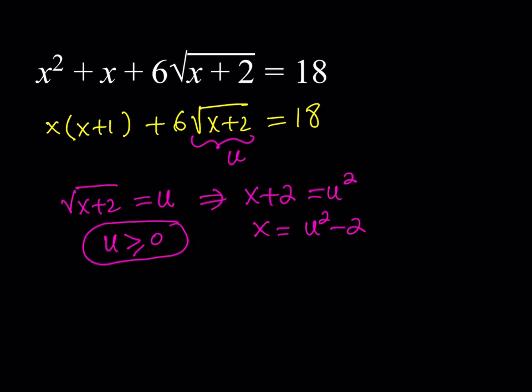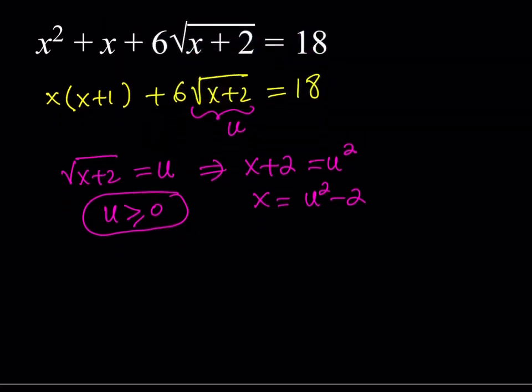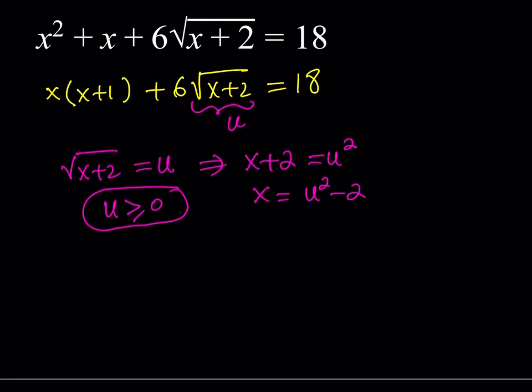So what I'm going to do is I'm just going to go ahead and substitute that into our equation here, and let's see how that proceeds. So I have x squared plus x, but I wrote it as x times x plus 1. So I can just go ahead and replace x with u squared minus 2. And then x plus 1 is going to be u squared minus 1. And then I have 6u, and that's equal to 18.